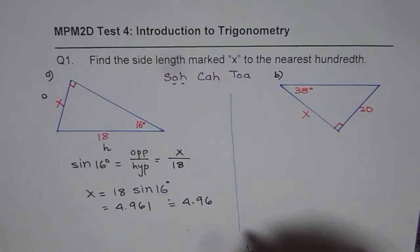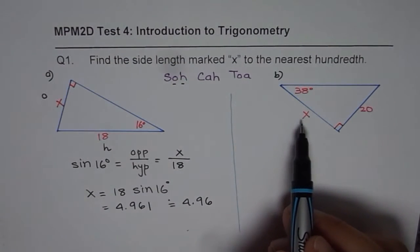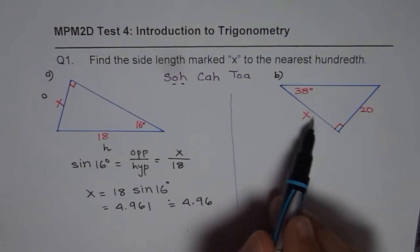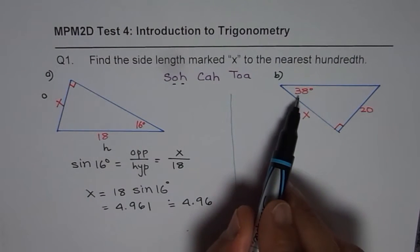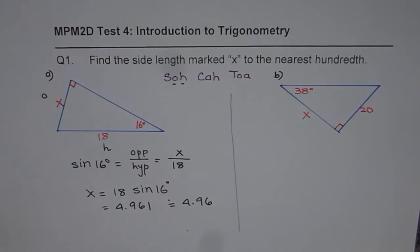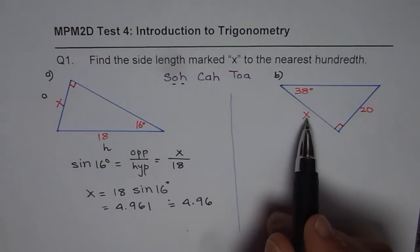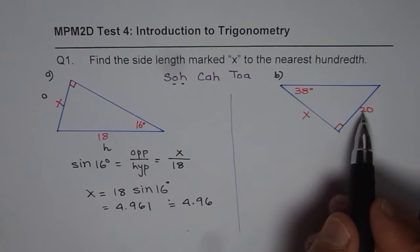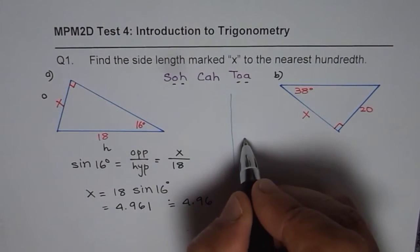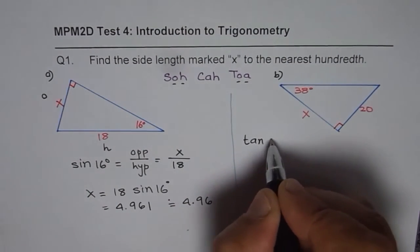In part B, what you notice is the angle given to us is 38 degrees. Side opposite to the angle is given as 20, and X is adjacent to the right triangle, so it is between 38 degrees and the right angle. So what we are given here is the opposite and adjacent sides. So we can use tan. What is tan of 38 degrees?